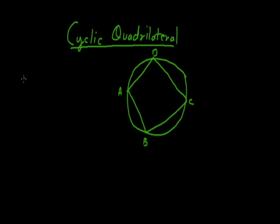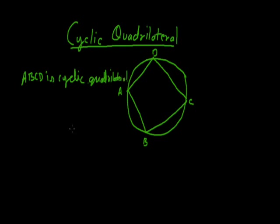So we can say that ABCD is a cyclic quadrilateral. The most important property of a cyclic quadrilateral is that the sum of its opposite angles is 180 degrees.